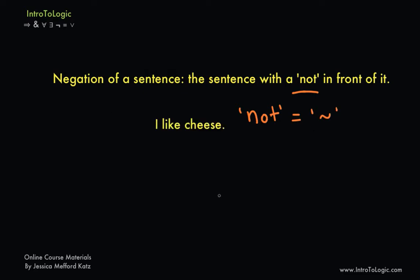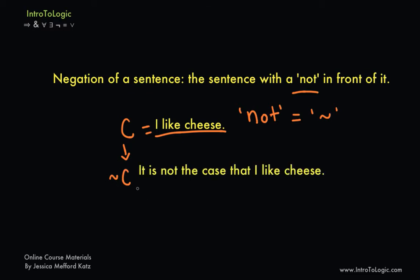For example, here we have the sentence 'I like cheese.' Let's represent this assertion with the letter C. If we're asked to give the negation of the sentence 'I like cheese,' we would simply add a negation sign in front of the C, giving us 'not C.' This can be represented by the sentence 'It is not the case that I like cheese,' or more colloquially, 'I do not like cheese.' So not-C is equivalent to both of these sentences — they mean the same thing, just written in different forms.